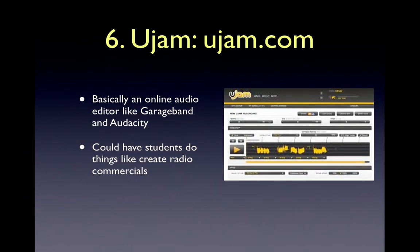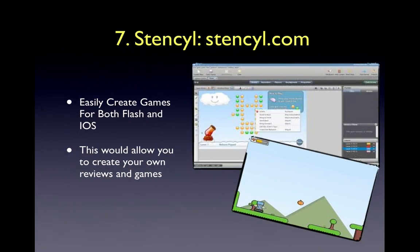Number six is Ujam. Ujam is basically an online audio editor like GarageBand or Audacity. The nice thing about Ujam is it doesn't matter what computer you have — you can always use it. You could have students do things like create radio commercials through Ujam. Number seven is Stencil. Stencil allows you to easily create games for both Flash and iOS, and it lets you create things like your own review games.